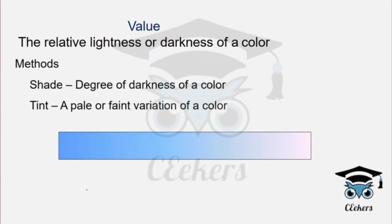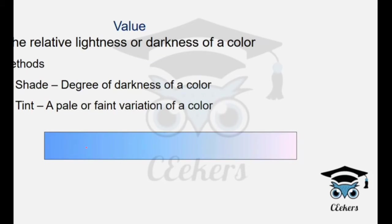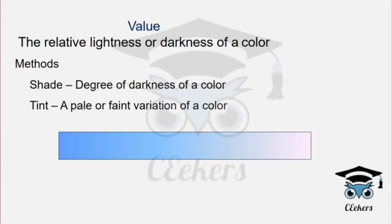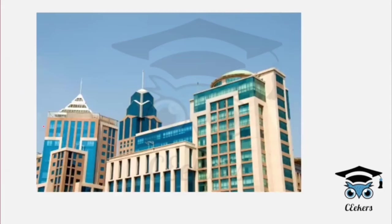Value refers to light or dark color — it is a variation in the area. Texture has value; it involves shade and tint. Shade and tint describe the darkness or lightness of a color.